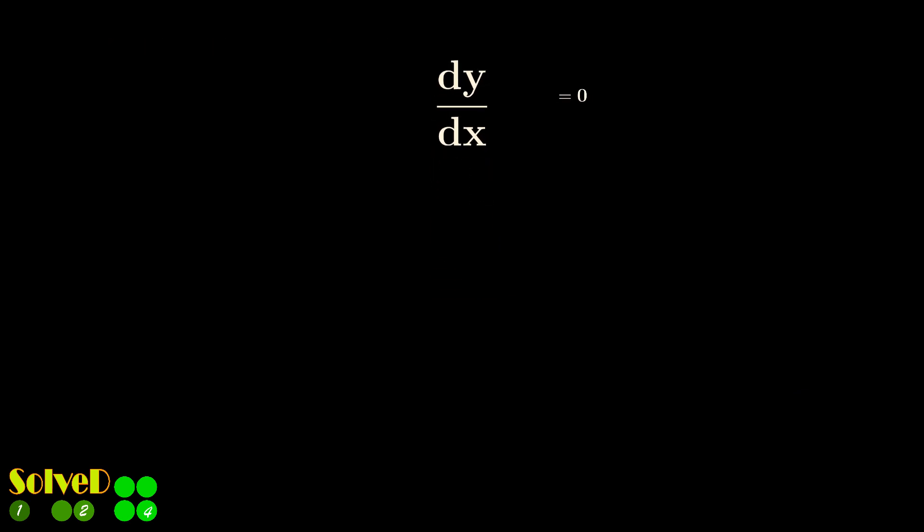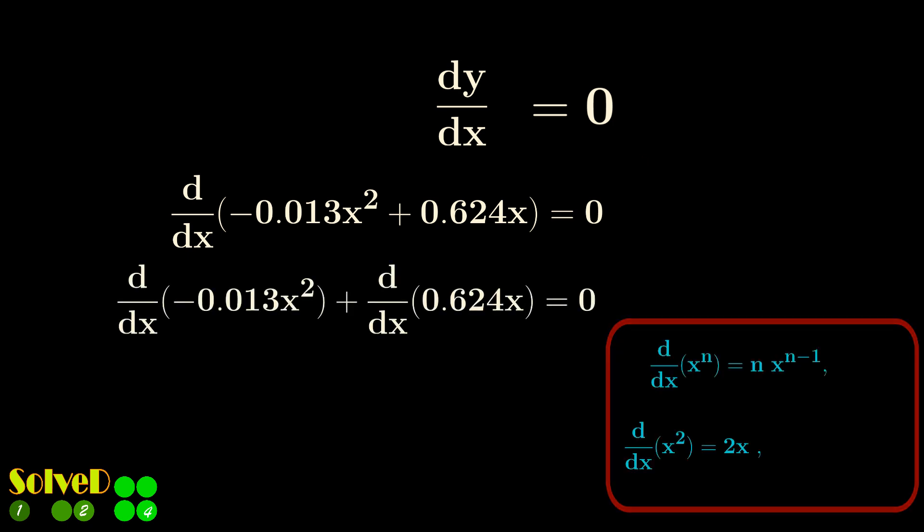Let's find the derivative and set equal to zero. Use these rules for the differentiation.